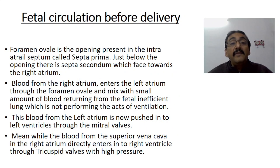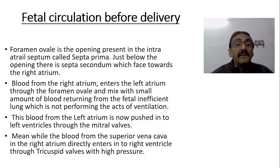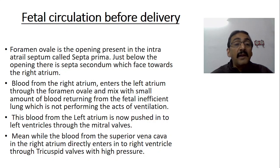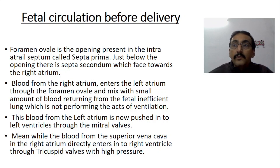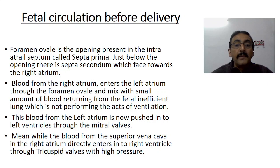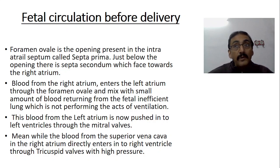The foramen ovale is an opening present in the interatrial septum called the septum primum. Just below the opening there is another septum called the septum secundum, which faces towards the right atrium. Blood from the right atrium enters the left atrium through the foramen ovale and mixes with a small amount of blood returning from the fetal lungs through the pulmonary veins. Although the fetal lung does not carry out much purification, some blood from the lungs mixes in the left atrium. This blood is then pushed into the left ventricle through the mitral valve.